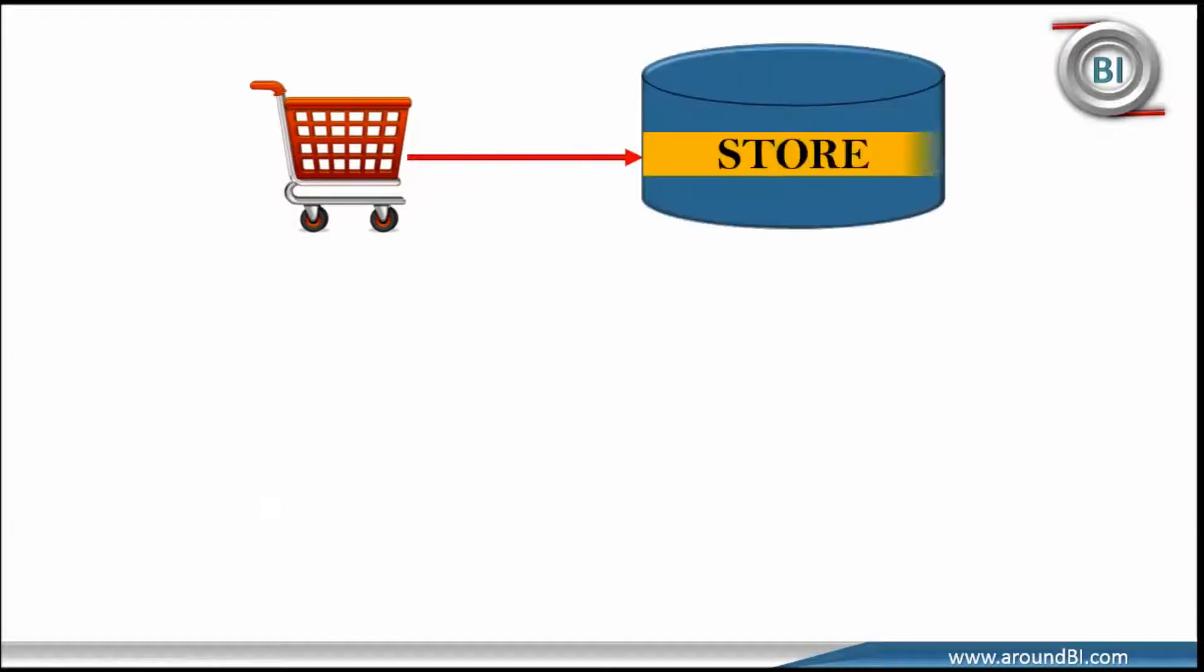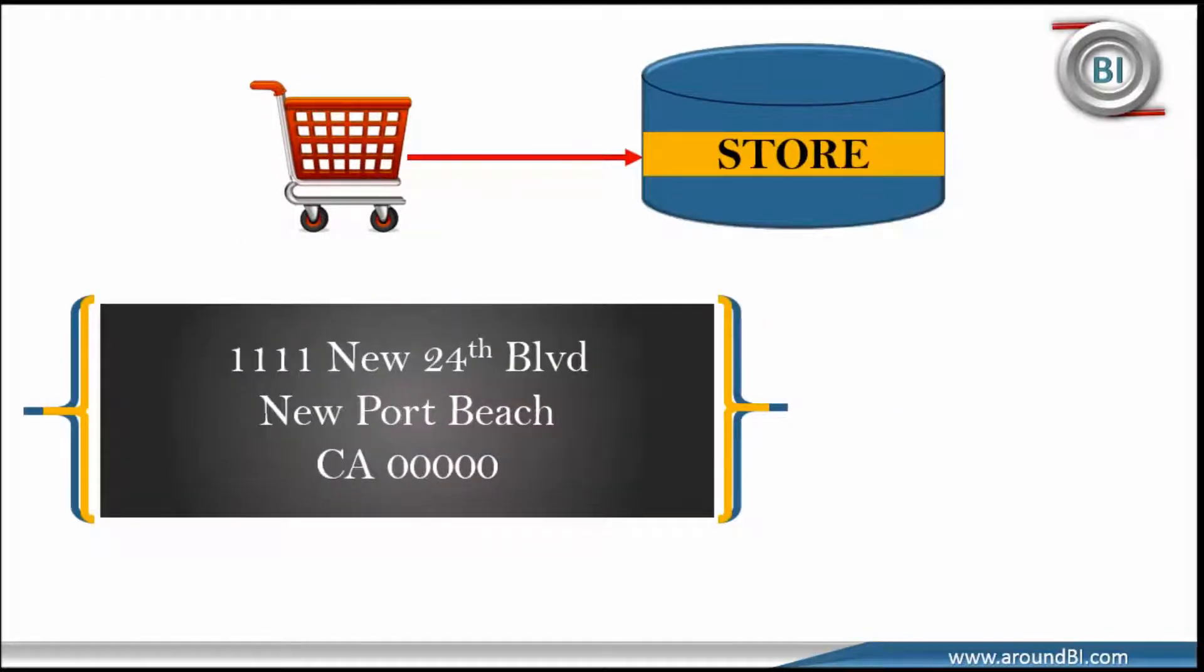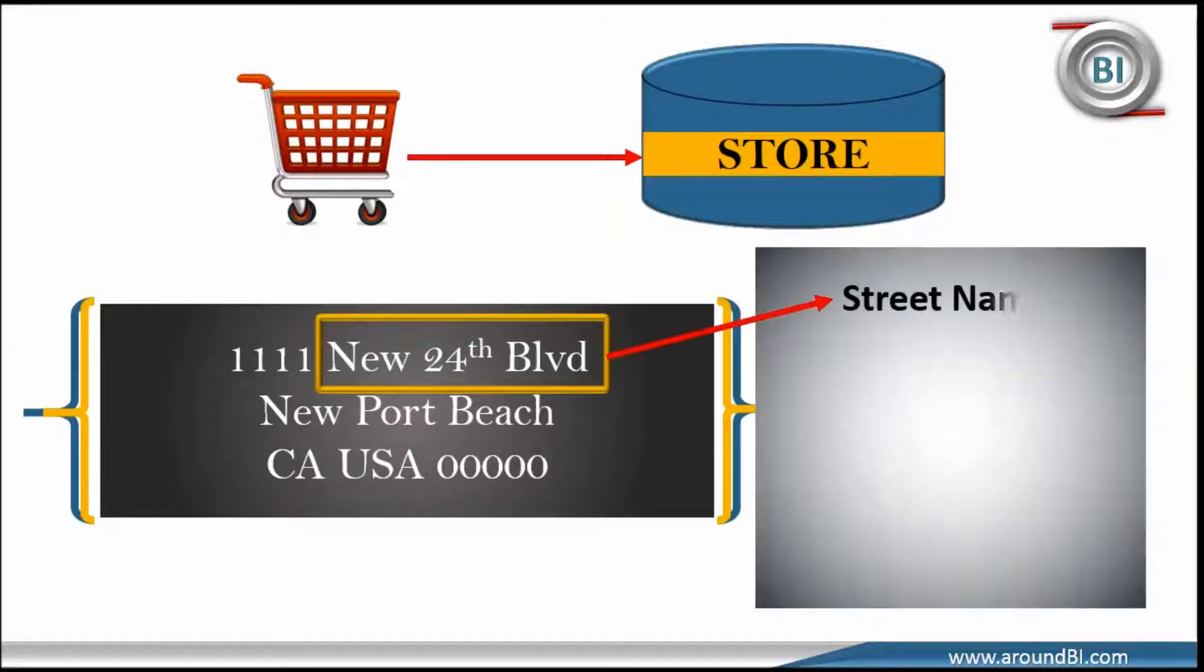In a retail business, each store represents a physical location and we know that a physical location will always have an address. Address provides geographical information. So each address consists of certain geographical attributes.